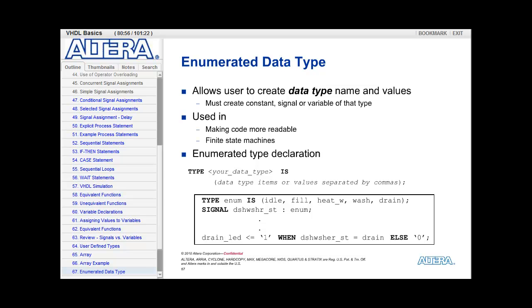The declaration for an enumerated data type also uses the keyword type followed by your data type name. So that's the name that you want to create, that you want to use to define your brand new data type. Is, and then in parentheses, are the data type items or values. So these are the names of the values of your data type, each separated by commas.